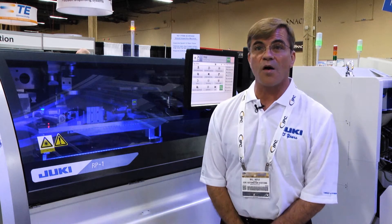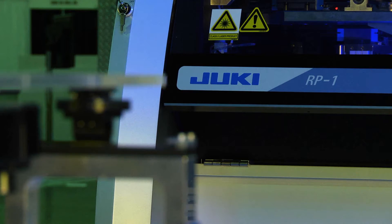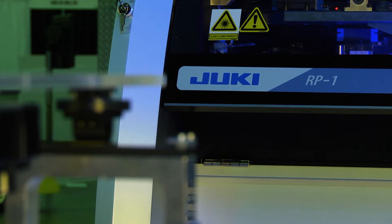Juki is introducing our new RP-1 High Accuracy High Speed Screen Printer. This system features a plus minus 10 micron accuracy, so ideal for small geometries and surface mount.